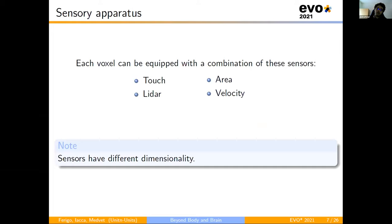The second component is the sensory apparatus. Each voxel can be equipped with a combination of sensors: the touch, the area, the lidar, and the velocity. The lidar is a vision sensor, and these sensors have different dimensionality, meaning that they read a different number of values. In particular, for example, the touch and the area read a single value, while the velocity reads two values, one for each axis, and we configured the lidar to read three values.